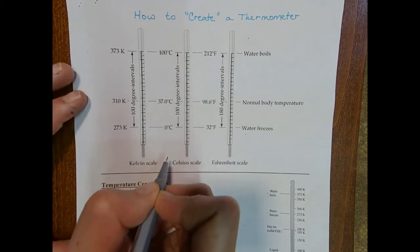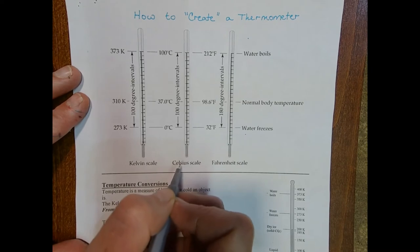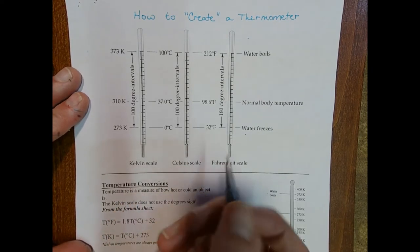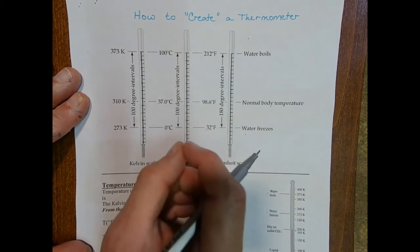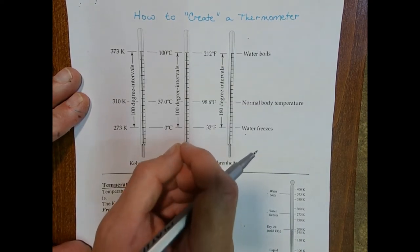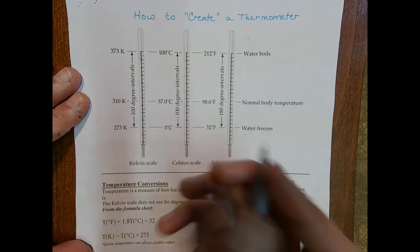So say you wanted to make a Celsius thermometer. How would you do that? Well, you'd get one of those very tiny cylinders. They're called capillary tubes and you're going to put some alcohol in there and you're going to close one end of the capillary tube.